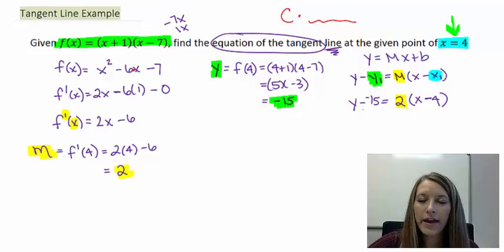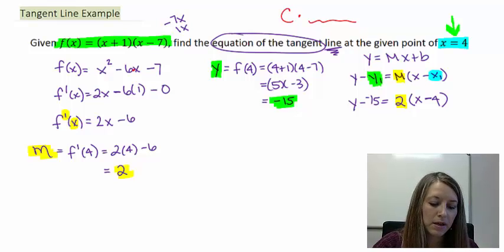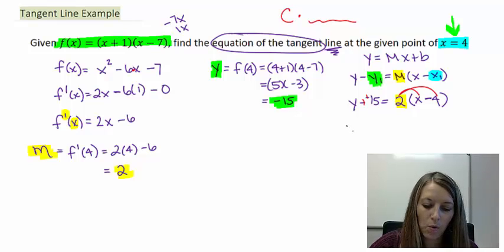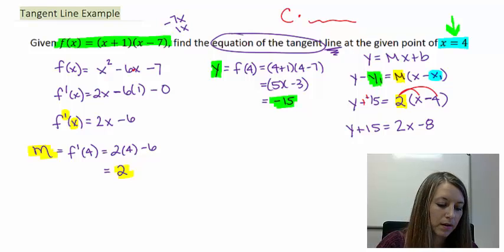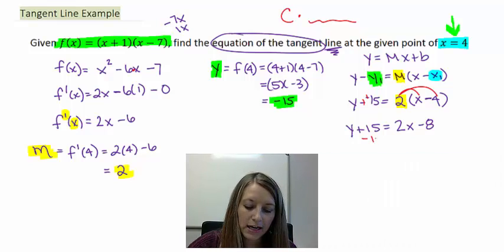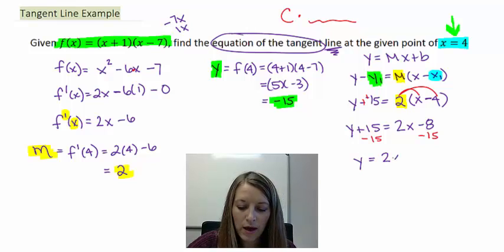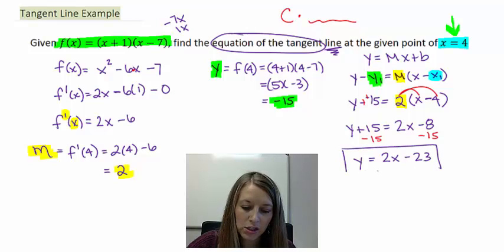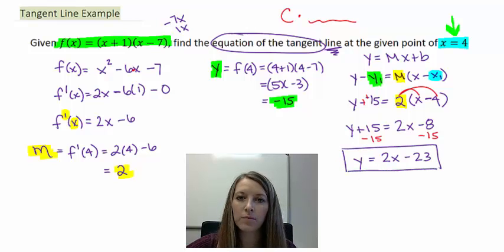Now, all I have to do is solve for y. So back to our algebra techniques. Let me cancel out my double negatives and distribute my 2. That gives me y + 15 = 2x - 8. Subtract my 15 over from both sides, and that gives me y = 2x - 23. So this is my alleged equation of the tangent line.